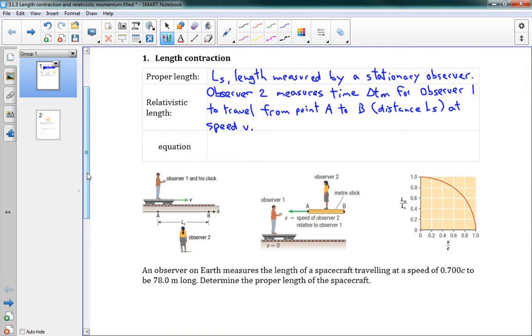So then that means that for Observer 1 to go from A to B at speed V, that makes sense that Ls is going to equal V delta Tm. So the distance from Observer 2's perspective is going to be the speed Observer 1 is moving times the time it seems to take for Observer 1 to travel.